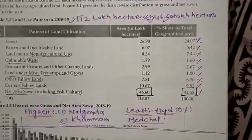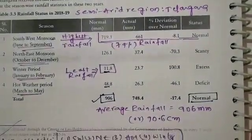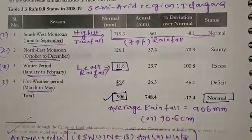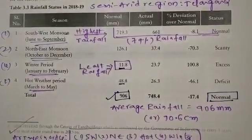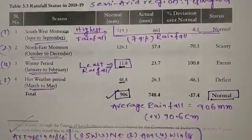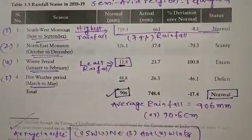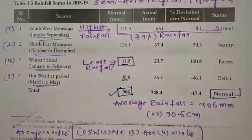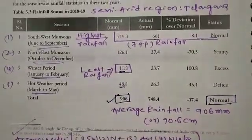Forest area is 26.9% or 24%, cultivable area and other fallow lands are very important. Regarding rainfall pattern, Telangana is a semi-arid region. There are 4 types of rainfall: south west monsoon, north east monsoon, winter, and hot weather rainfall.